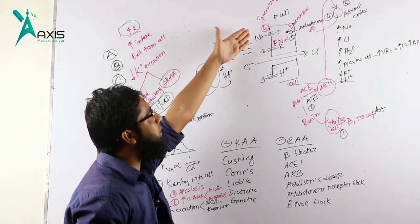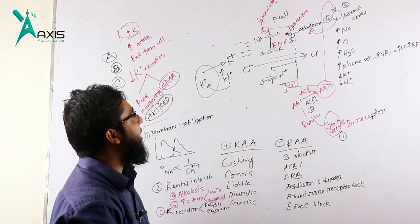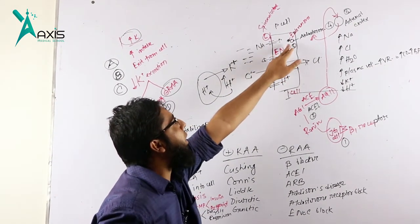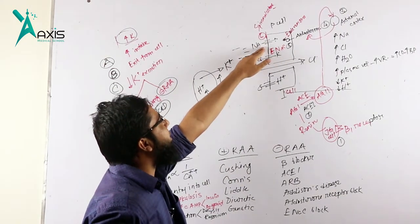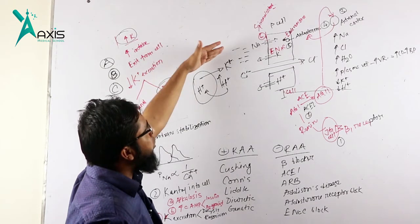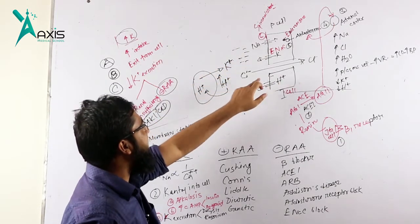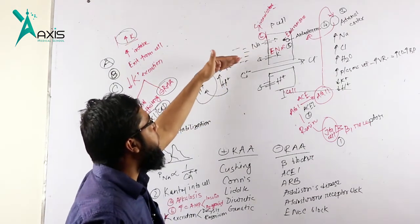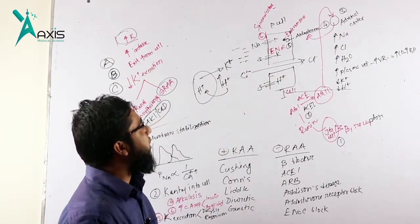Let me explain the renin-angiotensin system. The principle cell and intercalated cell of the late distal renal tubule are important. The principle cell has aldosterone receptor-mediated activity for sodium absorption. When aldosterone acts on the receptor, it generates epithelial sodium channels which are inserted into the apical membrane and powerfully absorb sodium. This creates a huge luminal negativity which brings out potassium and hydrogen into the lumen. However, potassium and hydrogen concentrations are much less than sodium, so the excess negativity is balanced by paracellular absorption of chloride.